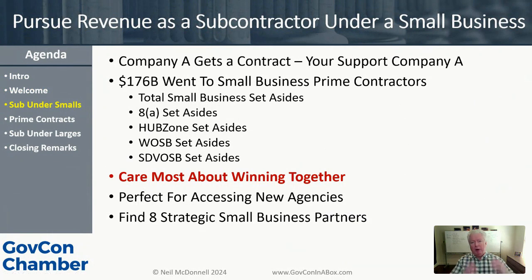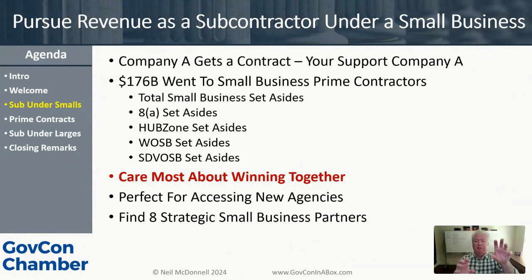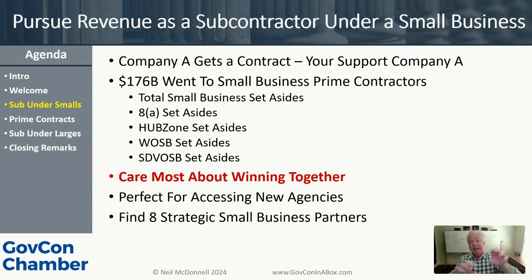Let's dive into pursuing the first revenue stream: revenue as a subcontractor under small businesses. Subcontracting is when company A gets a contract with the federal government for, say, $1 million, and they say, can you do something for $50,000 to $100,000 in support of it? If there are seven tasks, they might give you one. You are working for the prime contractor who got the contract with the government — it's actually commercial work for you, even though you're supporting the federal government.